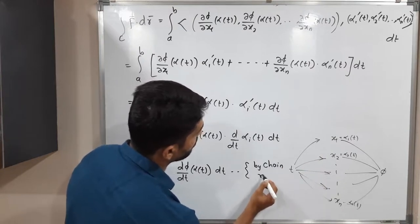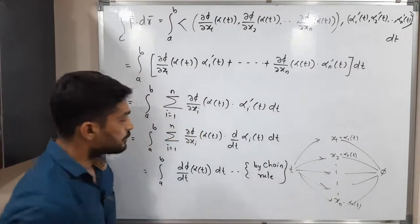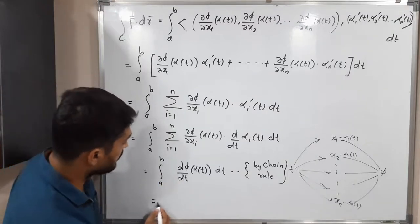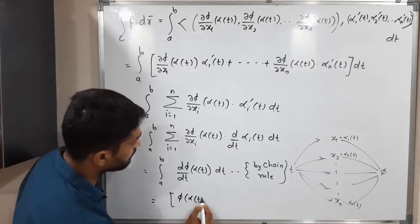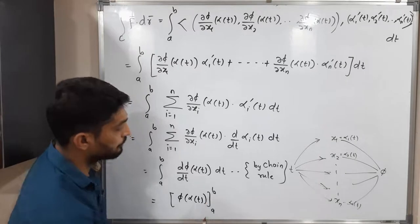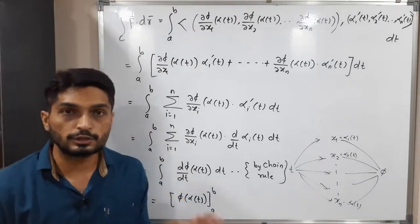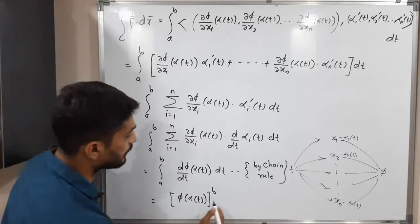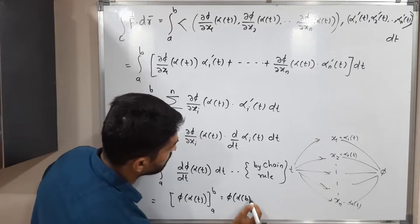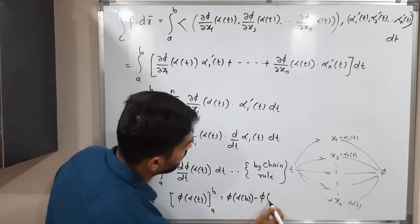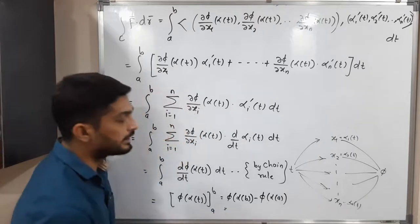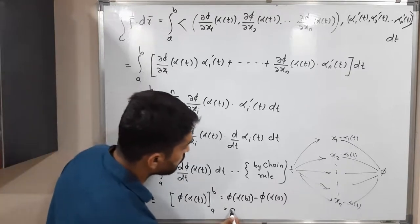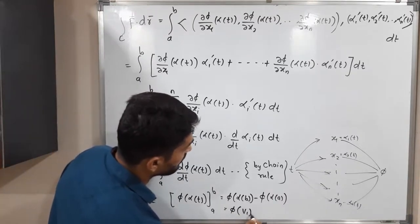By the chain rule, the integral from a to b of d/dt[phi(alpha(t))] dt simplifies because the derivative and integration cancel each other. We simply evaluate phi(alpha(t)) with limits a to b. Putting in the upper and lower limits gives phi(alpha(b)) minus phi(alpha(a)). Since alpha(b) = v₁ and alpha(a) = v₀, this equals phi(v₁) minus phi(v₀).